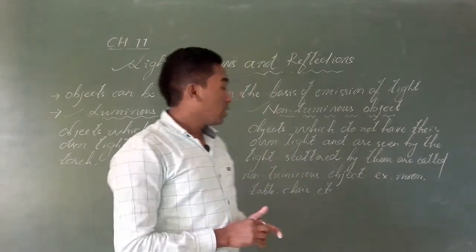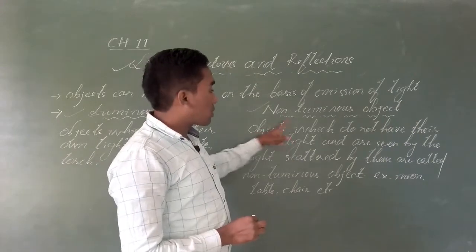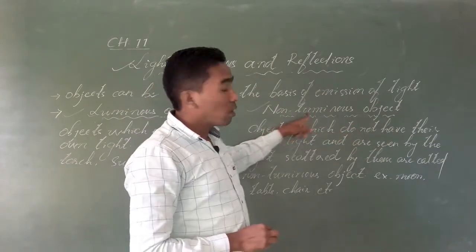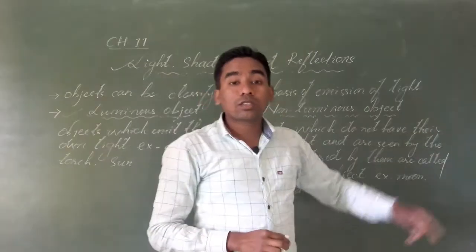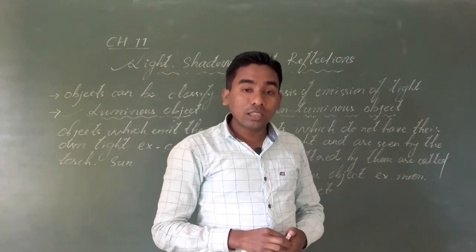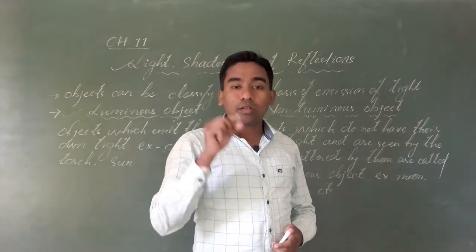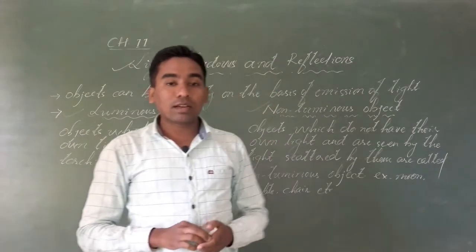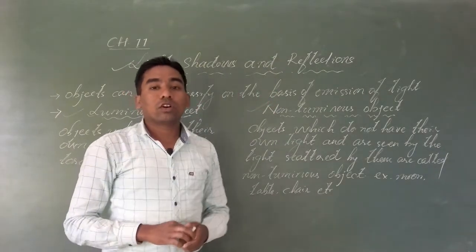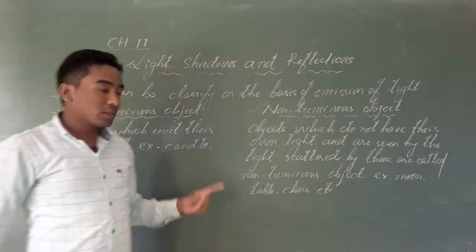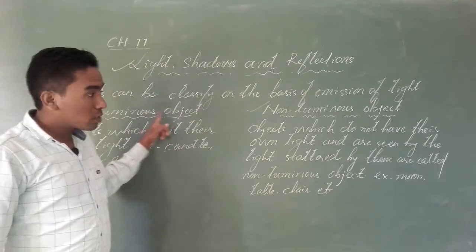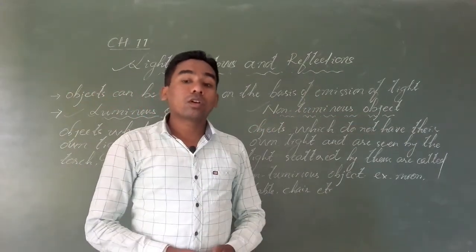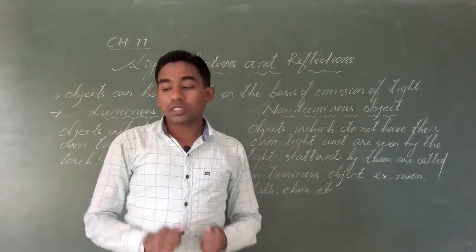That is why the objects which do not have their own light are known as non-luminous objects. In this way, according to the emission of light, we can categorize objects into two types: one is luminous objects, and the second one is non-luminous objects.